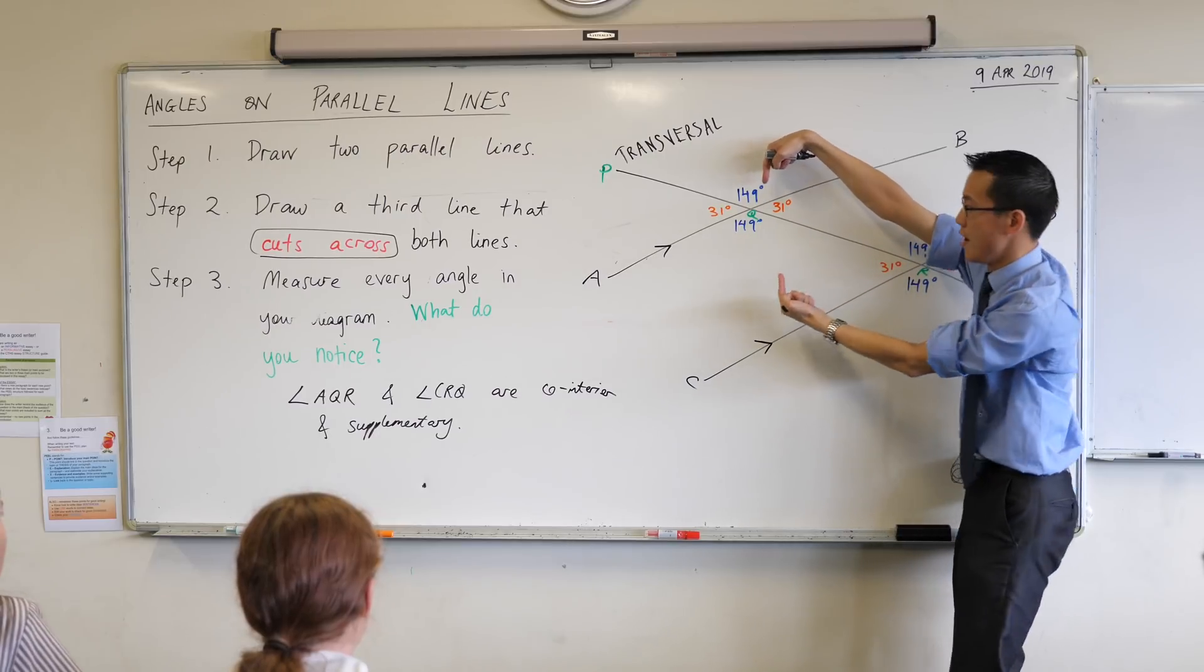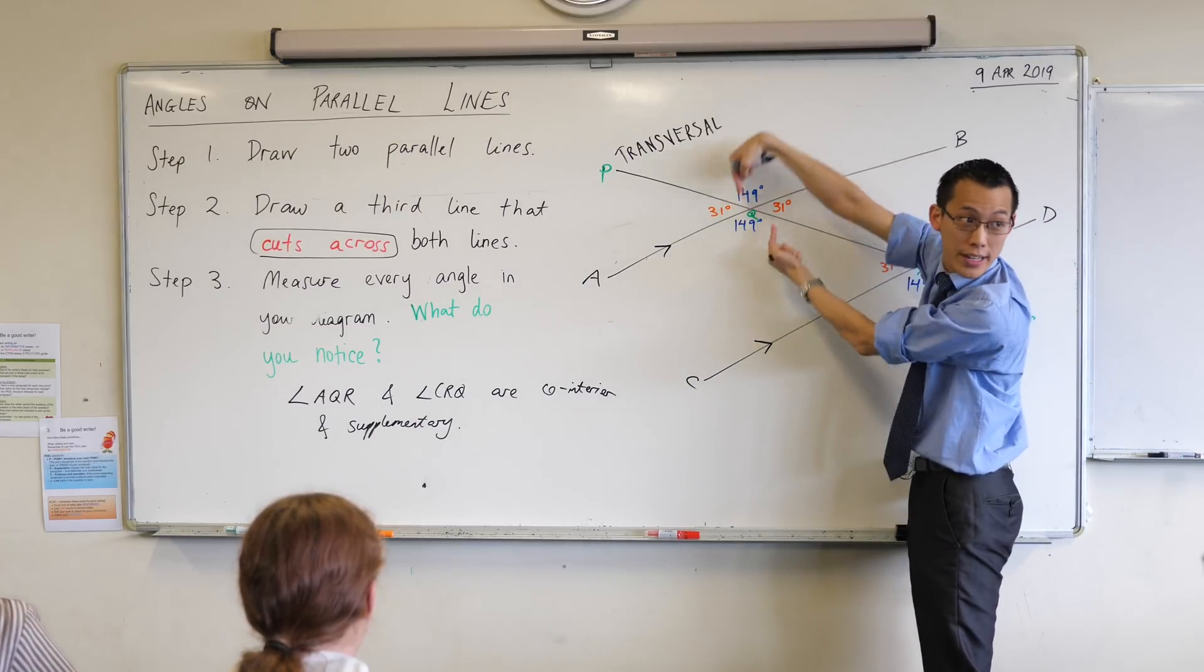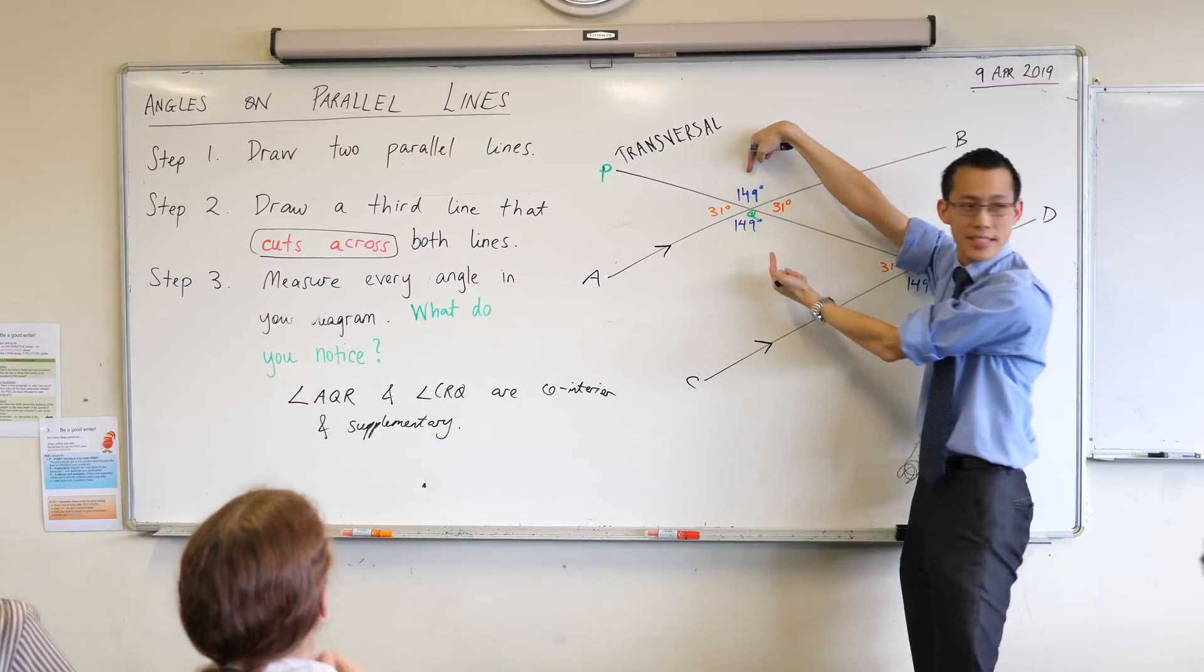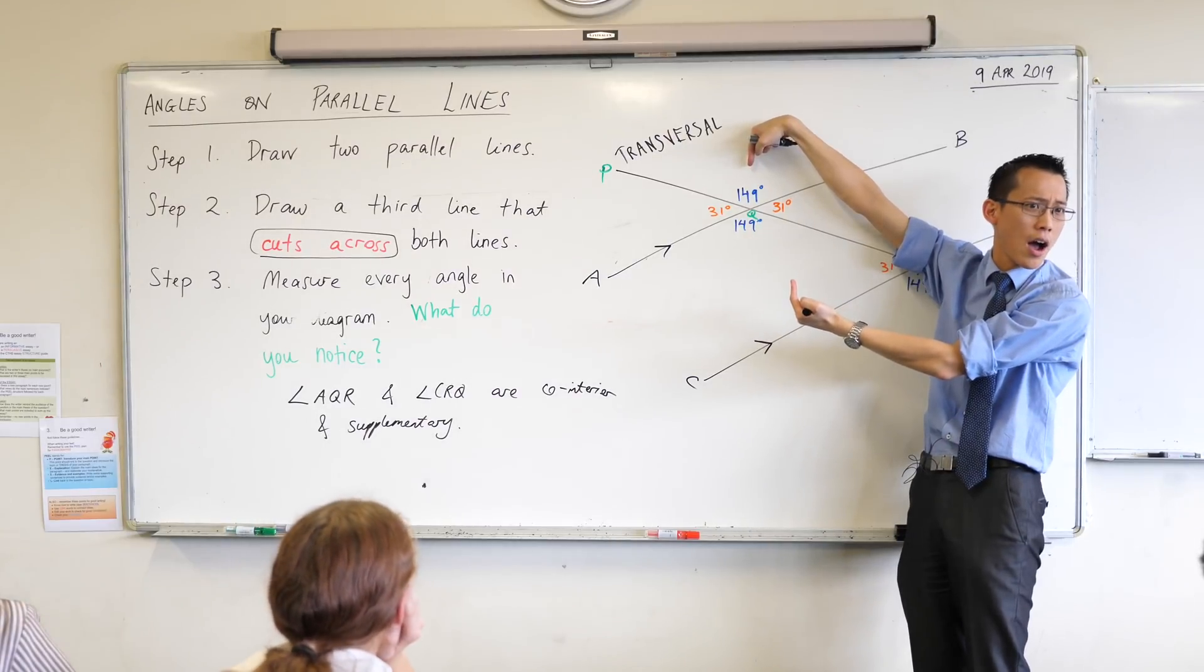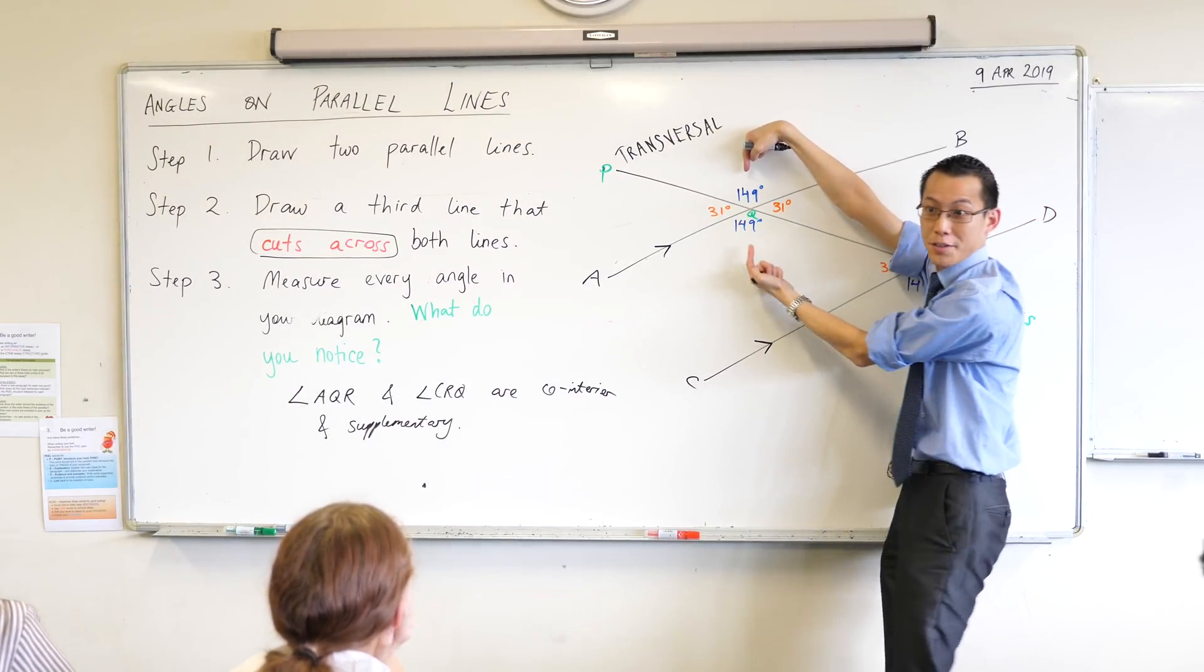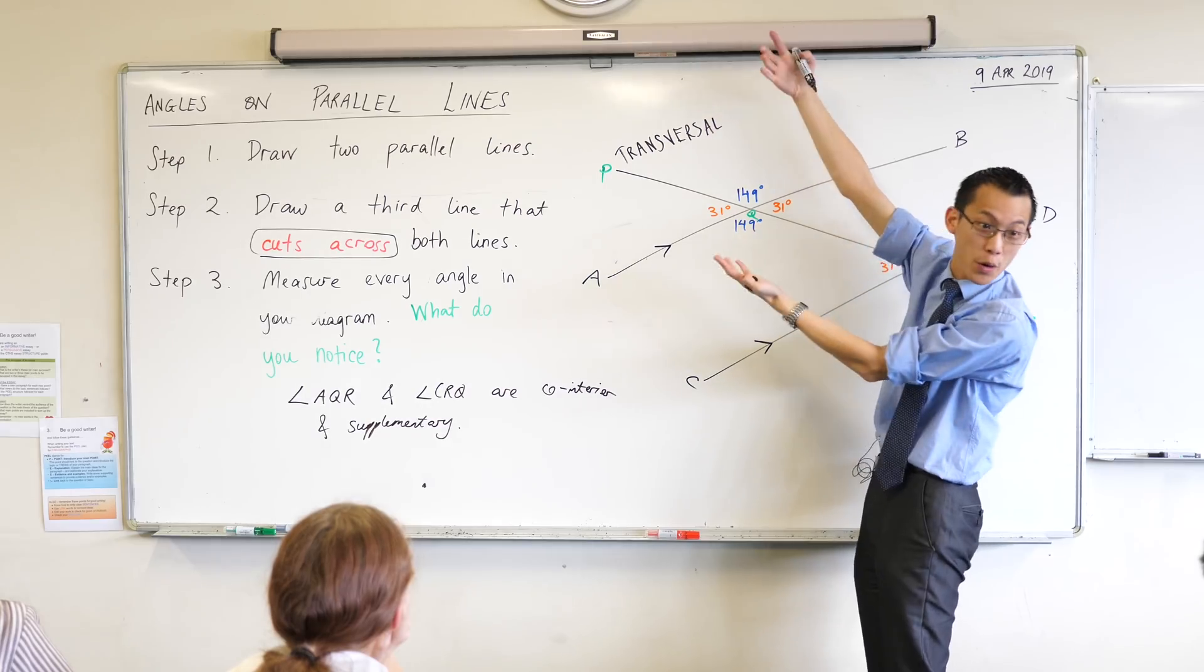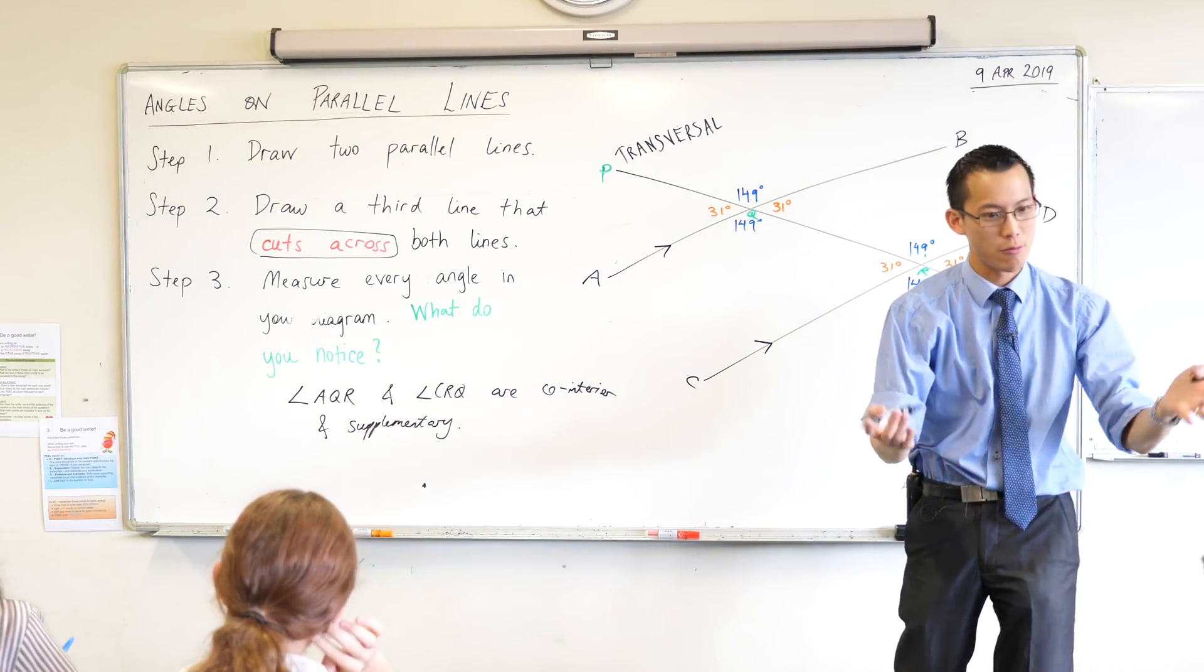Okay fantastic. So we have these guys being literally vertically opposite to each other and what does that mean? They're not supplementary are they? They are 149 and 149. They're equal to each other right because they're vertically opposite.